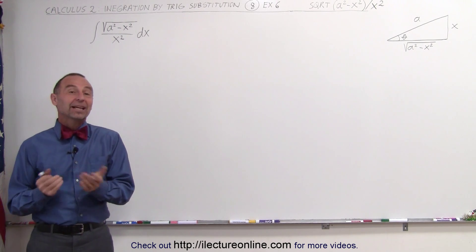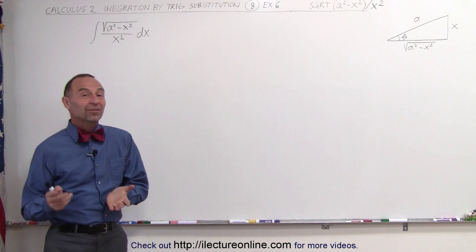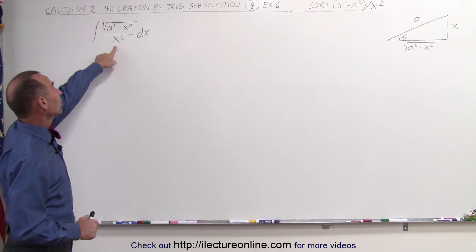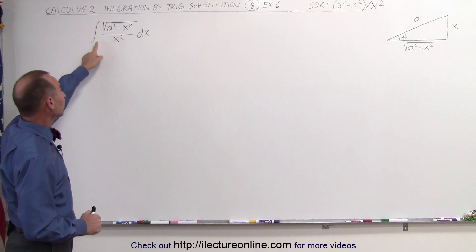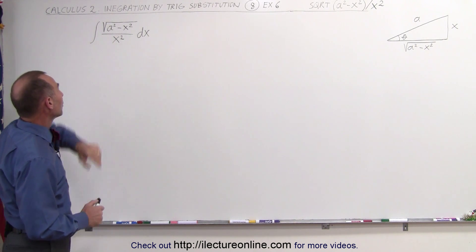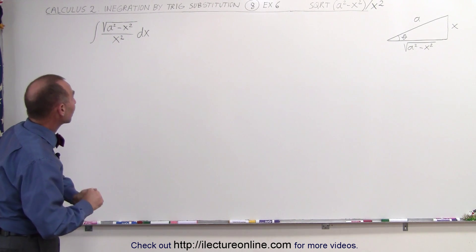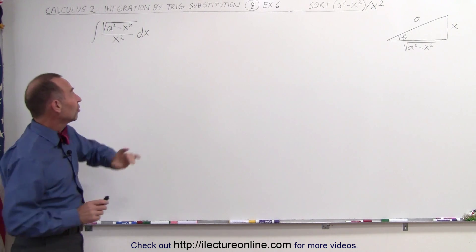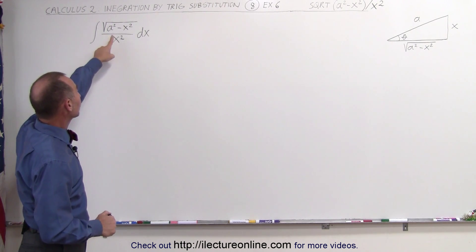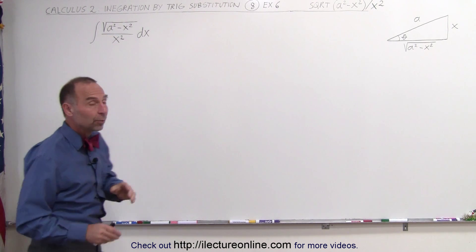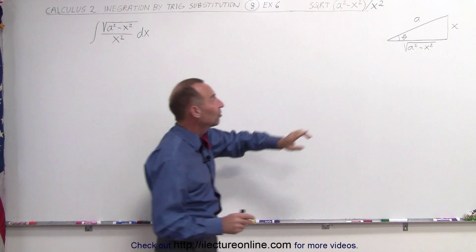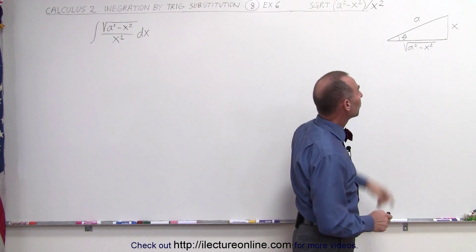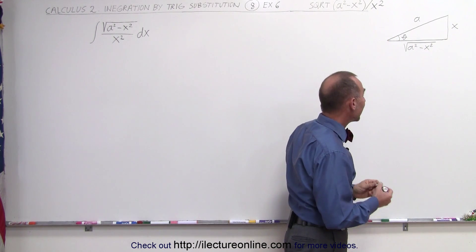Welcome to our lecture online. Our next example is similar to the previous one, but now we have an x squared in the denominator. We have the integral of the square root of a squared minus x squared divided by x squared. Since we recognize we have the square root of a squared minus x squared, we're going to use this type of trig substitution, this kind of relationship between a and x.